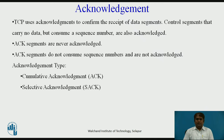TCP uses acknowledgements to confirm the receipt of data segments. Control segments that carry no data but consume a sequence number are also acknowledged. ACK segments do not consume sequence numbers and are never acknowledged.